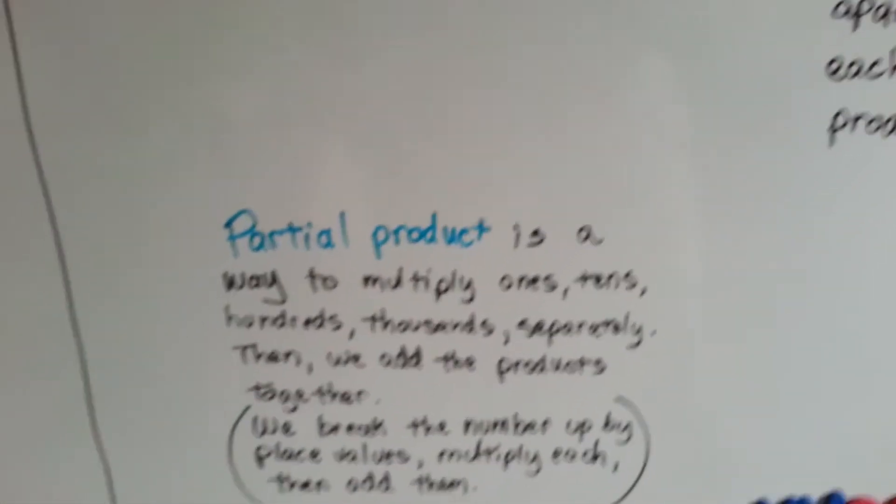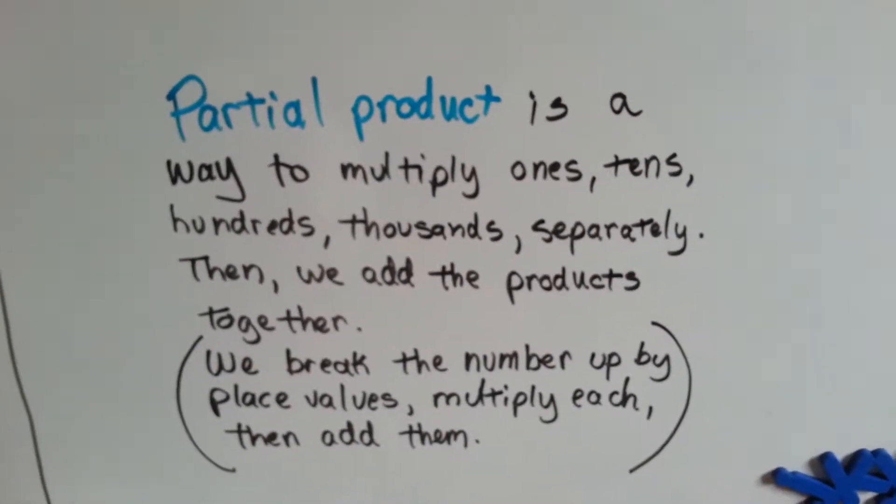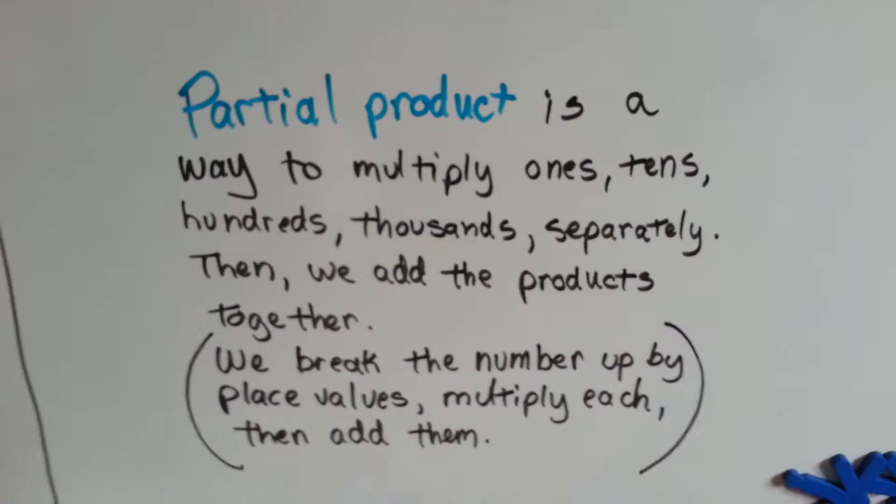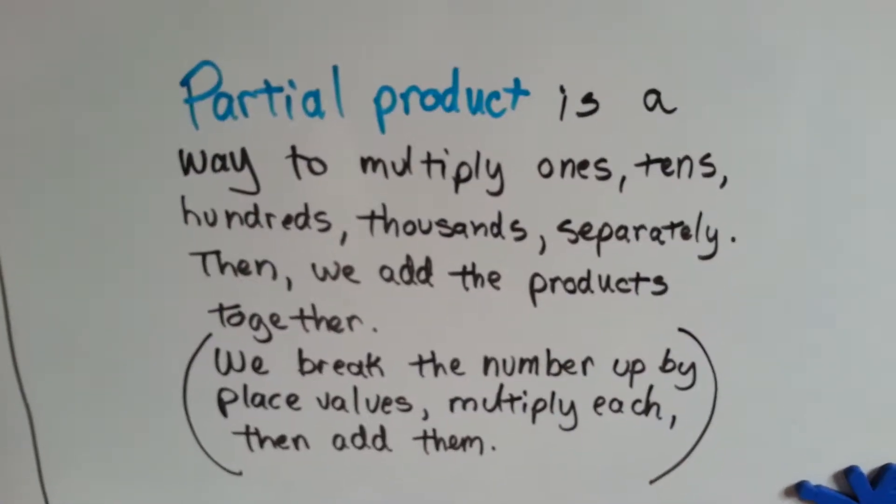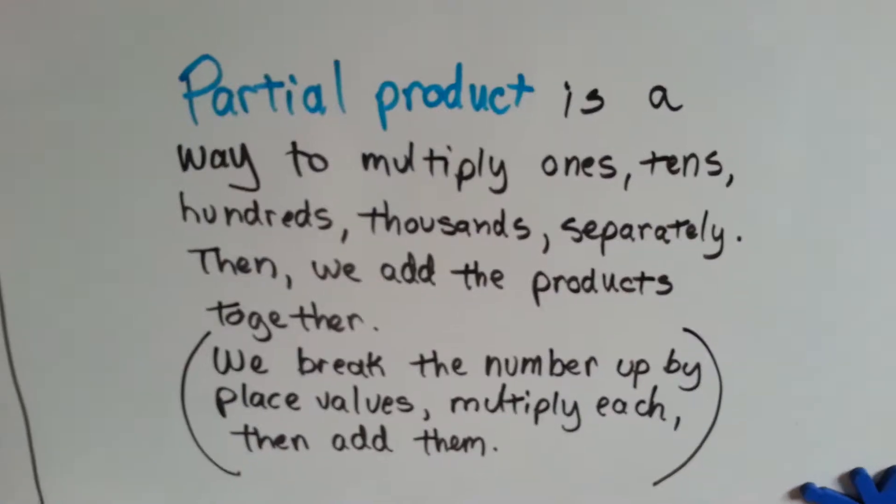A partial product is a way to multiply ones, tens, hundreds, thousands separately, then we add the products together. What we're doing is we're breaking the number up by place values, multiplying each place value, and then adding them.